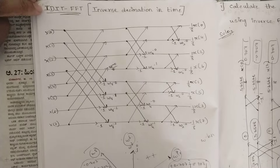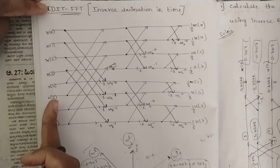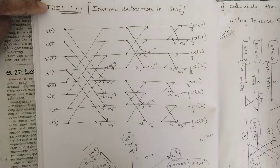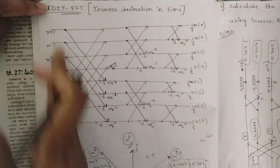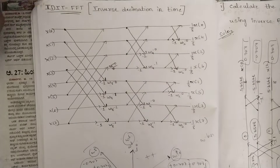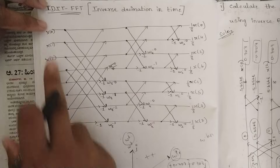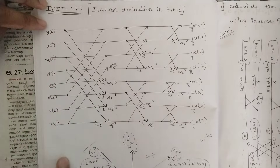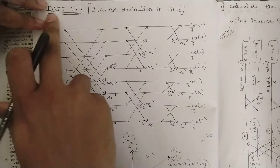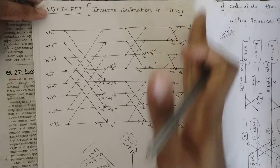First, consider DIT: on the input side, the inputs are shuffled. In DIT the inputs were shuffled according to the pairs. Now in IDIT the outputs are shuffled, and the inputs remain as they are — that is, capital X of zero through X of seven, all the DFT values. The inputs remain in sequence in IDIT, and on the output side the sequence changes.